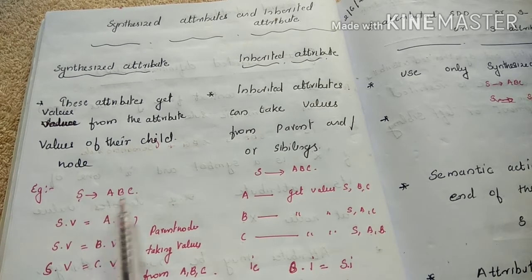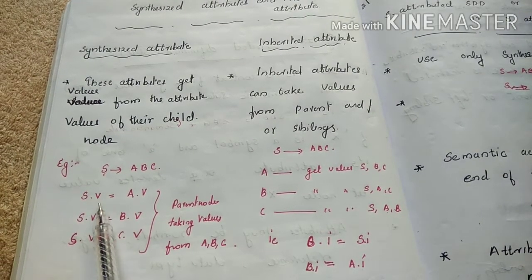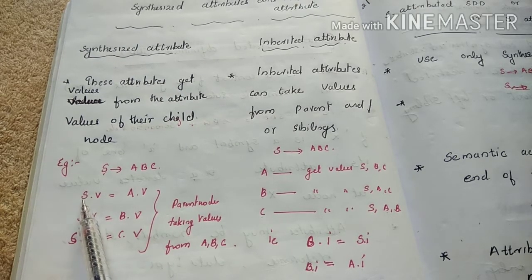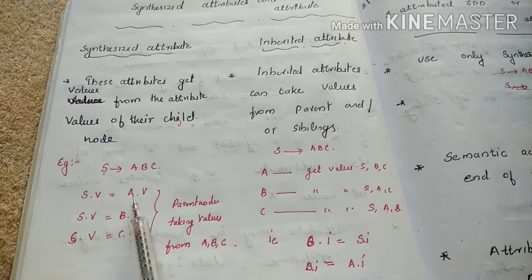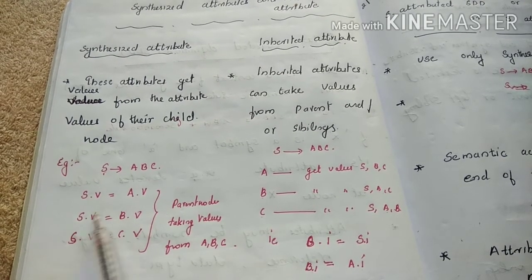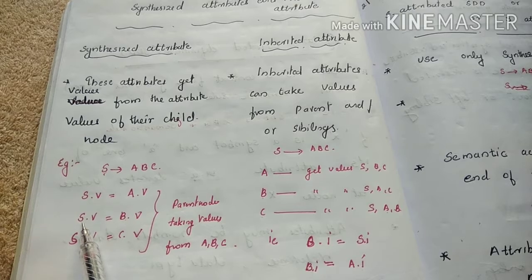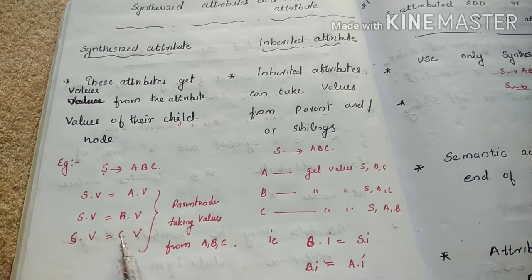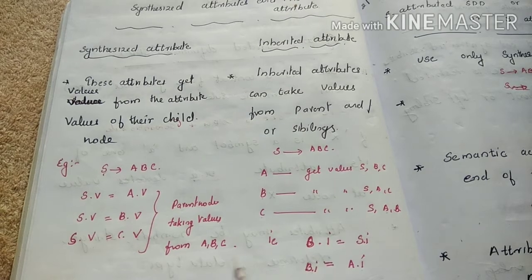We will examine it. S is equal to ABC — S is the parent, a Synthesized Attribute. So S.V is equal to A.V, meaning the value of S comes from child node A. Here S.V is equal to B.V, so B is a child node. And S.V is equal to C.V — here also C is a child node. So these three are examples of Synthesized Attribute.